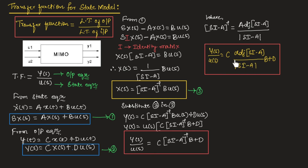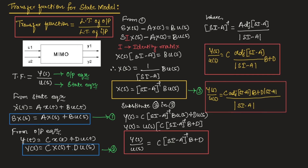We can write one more formula by taking det(SI − A) as the LCM. So Y(S)/U(S) = [C · adj(SI − A) · B + D · det(SI − A)] / det(SI − A). This is one more formula to remember. Based on these formulas, we will solve problems in the next videos. Hope you have understood the topic. Thank you.